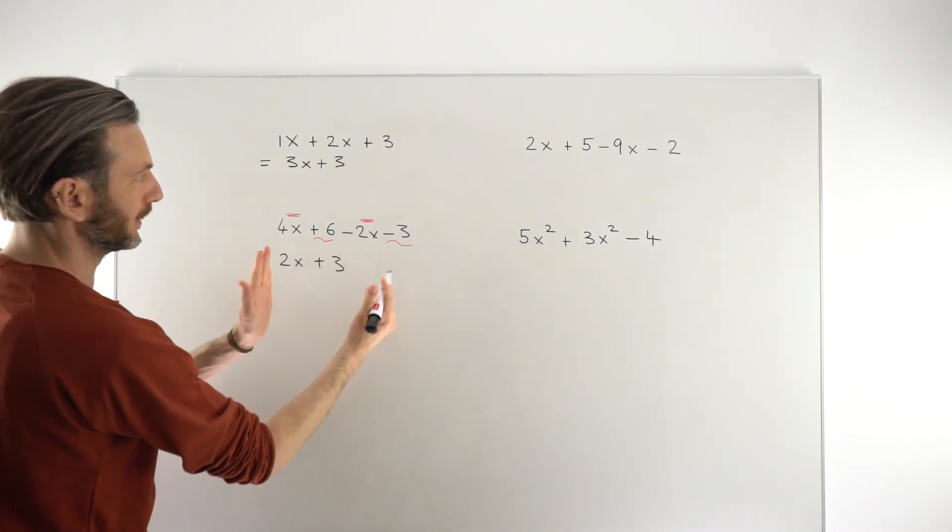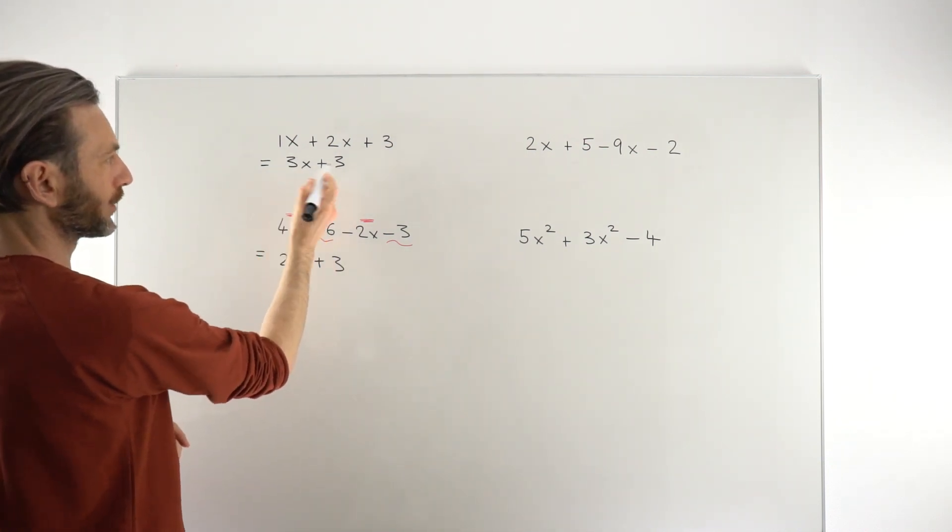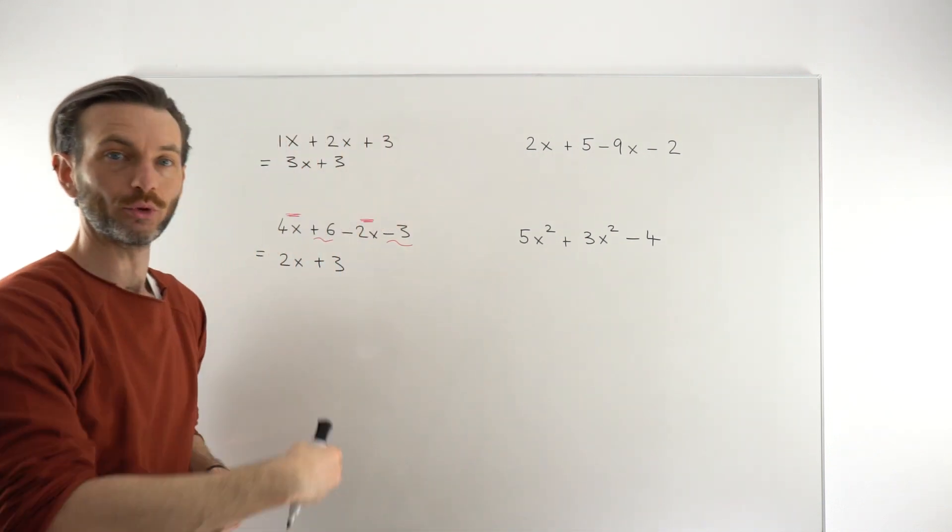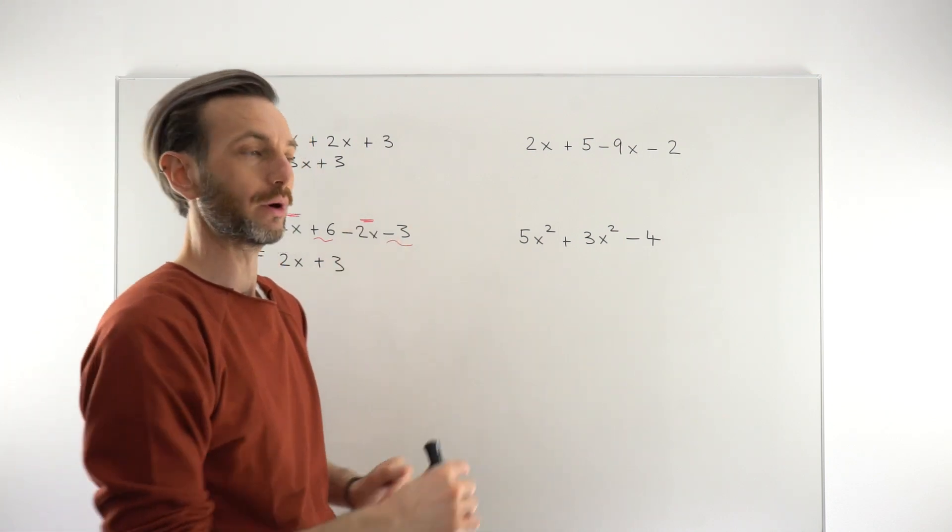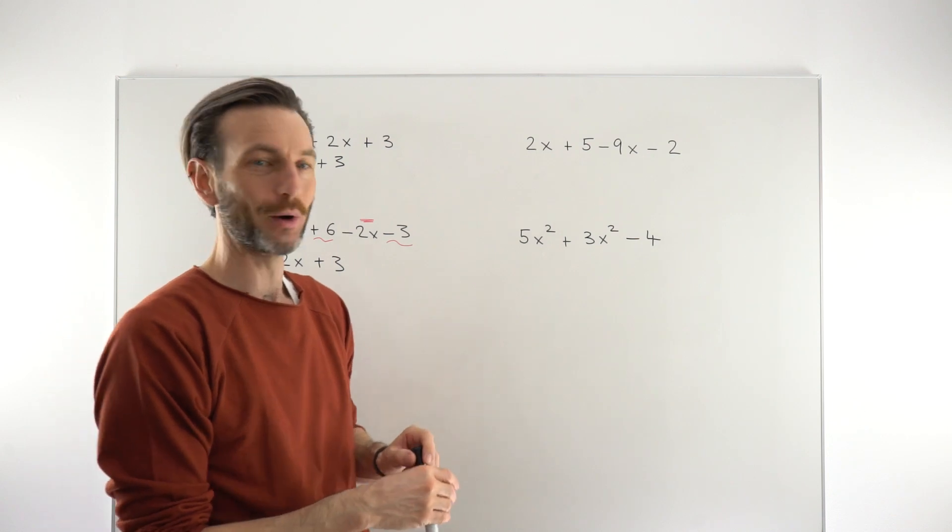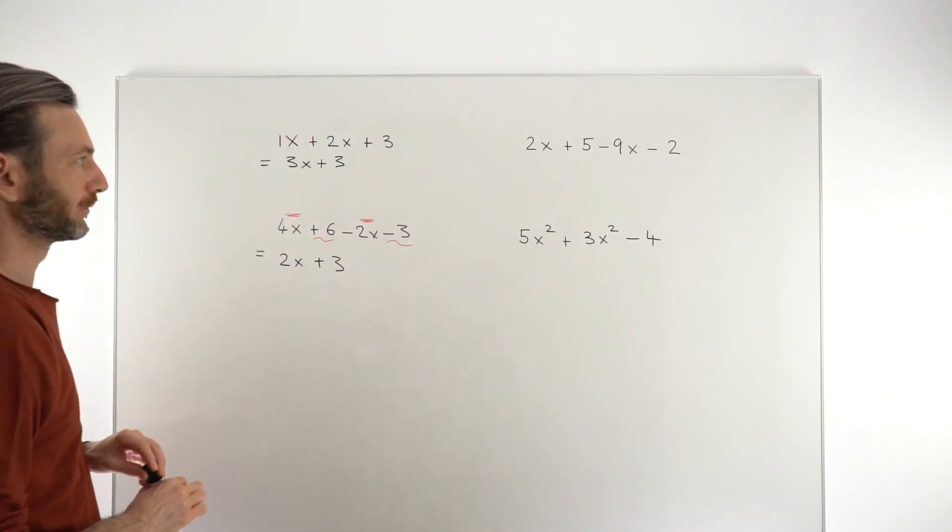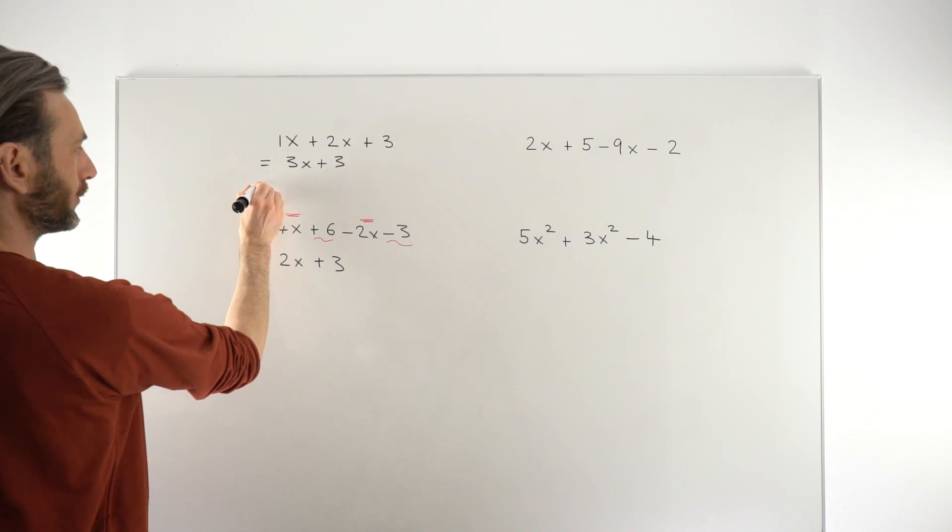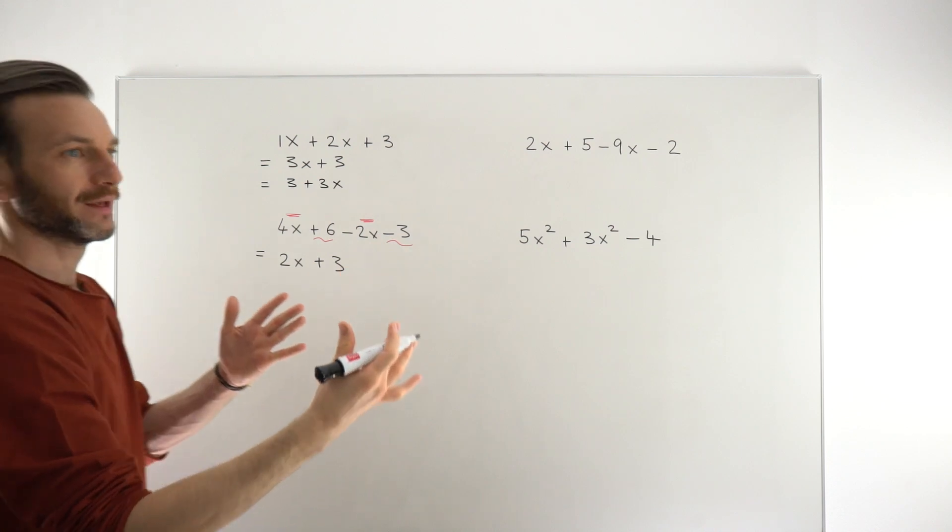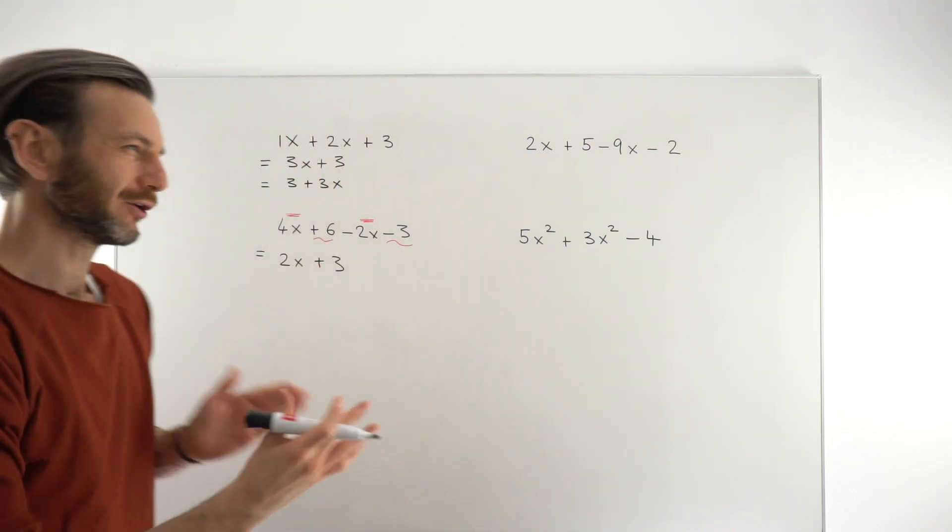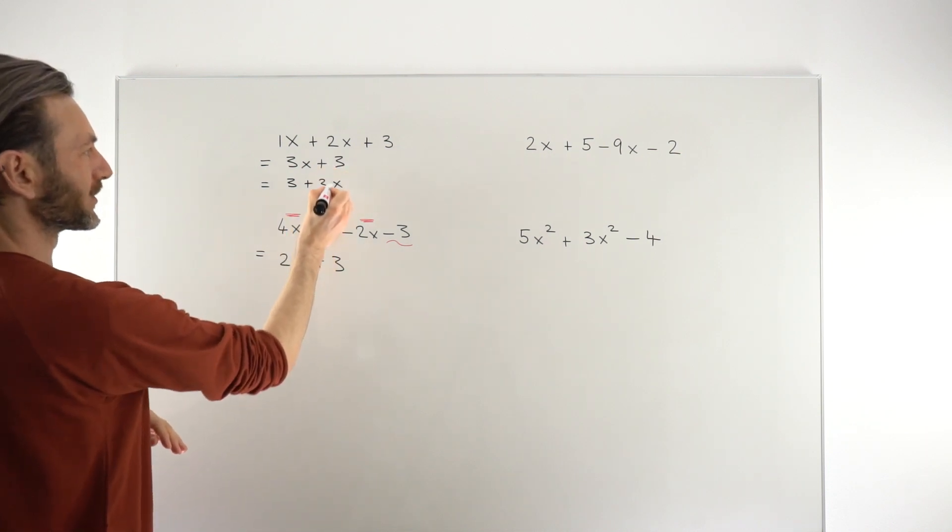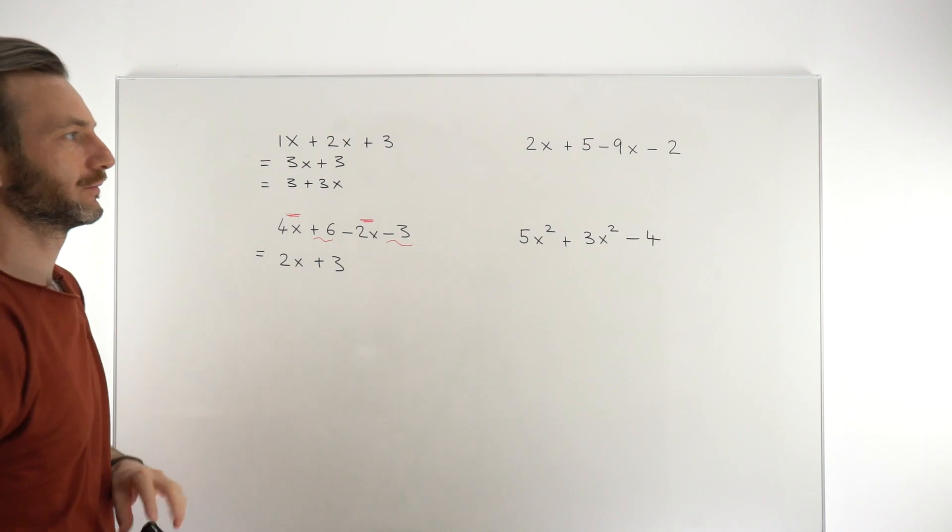When we're writing our final answer we always put the x term first and then the number term. If there was an x² and an x and a number, you would put the squared term first, then the x term, and then the number. We call that descending powers of x, and that's just the format that we look for. If you wrote this as 3 + 3x, it's not terrible, it's not quite right, it's kind of grammatically wrong. But these are the same thing, it's just that we prefer to have it in this format.